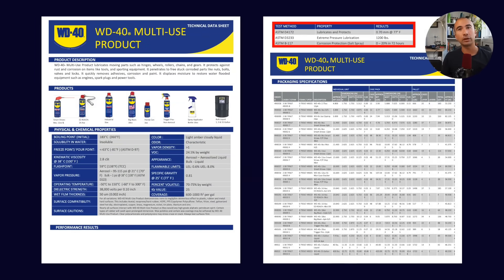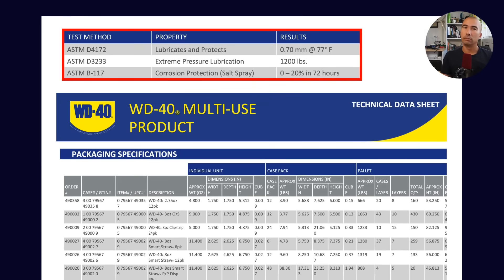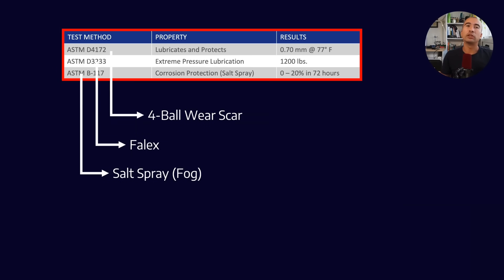Some other information we can glean from the data sheet: on the second page, we've got numbers for — lubricates and protects 0.7 millimeters, extreme pressure lubrication at 1,200 pounds, and corrosion protection at 0 to 20% in 72 hours. I find it interesting that a consumer-driven company like WD-40 would put these numbers on a data sheet, because to the average consumer this doesn't really mean anything. But to those in the know, the first is the 4-ball wear scar test, the second is the Falex test, and the third is the salt spray or fog test. I think it's interesting to look at the 4-ball wear scar, because we do have data from other lubricants to compare it to — 0.7 millimeters at 77 degrees Fahrenheit.